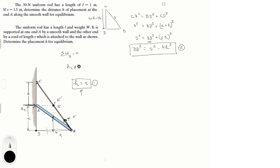Now I'll work with the inner triangle composed of points A, B, and D. The length AB is L, and AD is H (since X equals H). By the Pythagorean theorem: AB² = AD² + BD², so L² = H² + BD². Solving for BD²: BD² = L² − H².